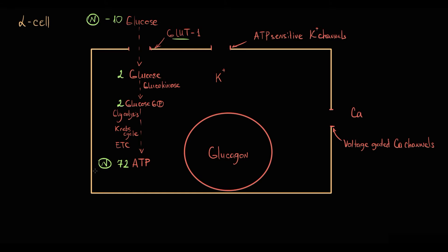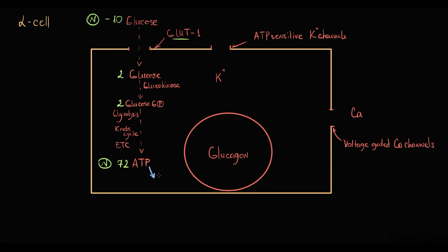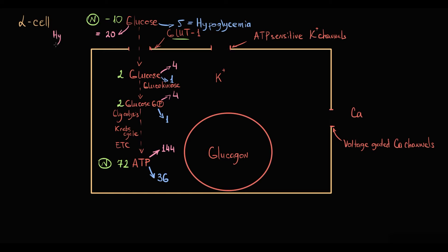The cell can determine the level of glucose in the blood under various conditions. If the amount of ATP per minute decreases to 36 ATP molecules, then blood glucose level is 2 times lower than normal — hypoglycemia. And if the amount of ATP becomes 144, then blood glucose level is 2 times higher than normal — hyperglycemia.